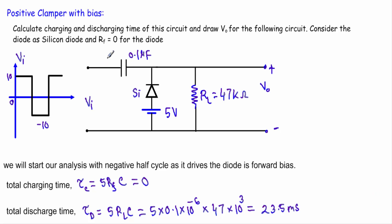This is my second example of a positive clamper circuit with bias. Let me read out the question: calculate the charging and discharging time of the circuit, and draw the output voltage Vo for this given circuit.